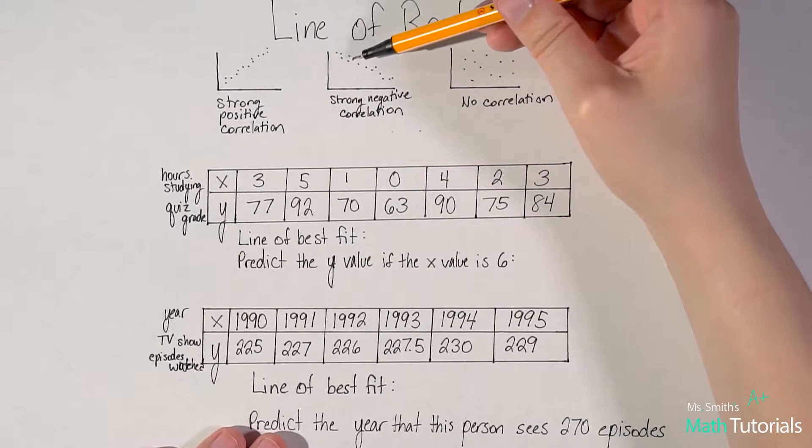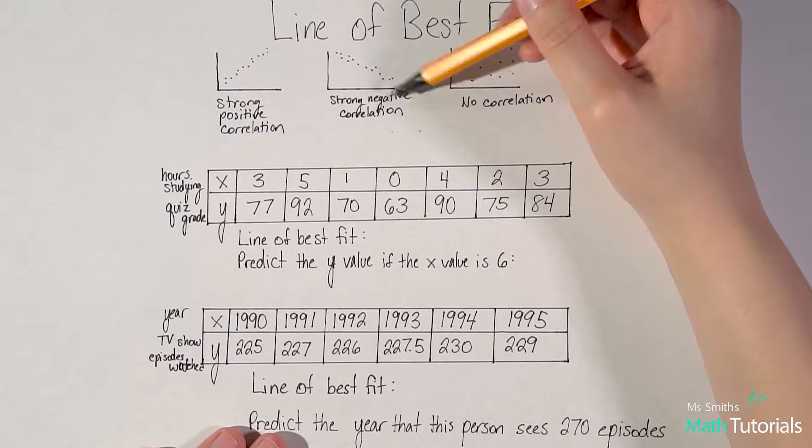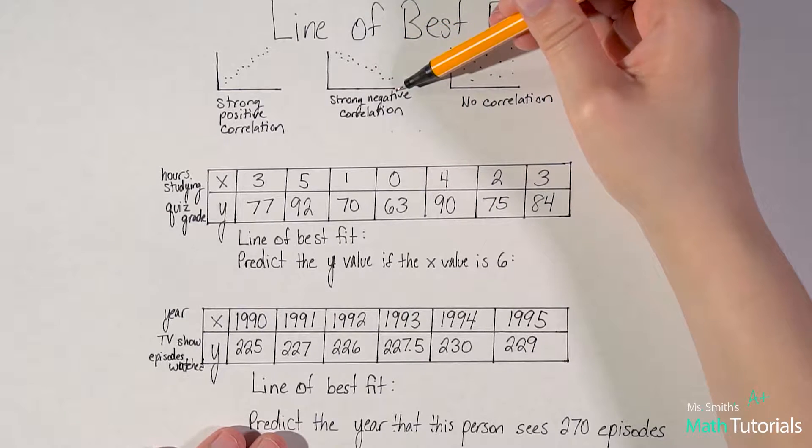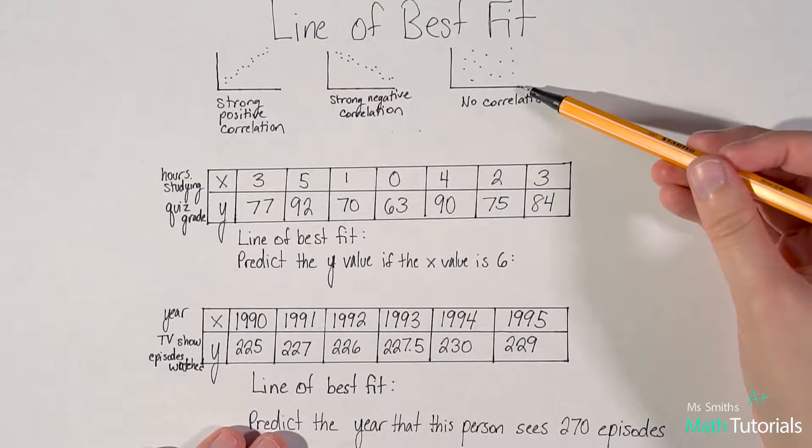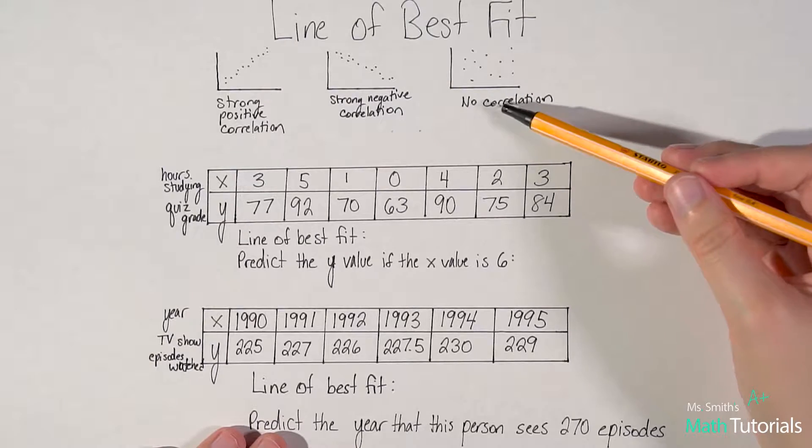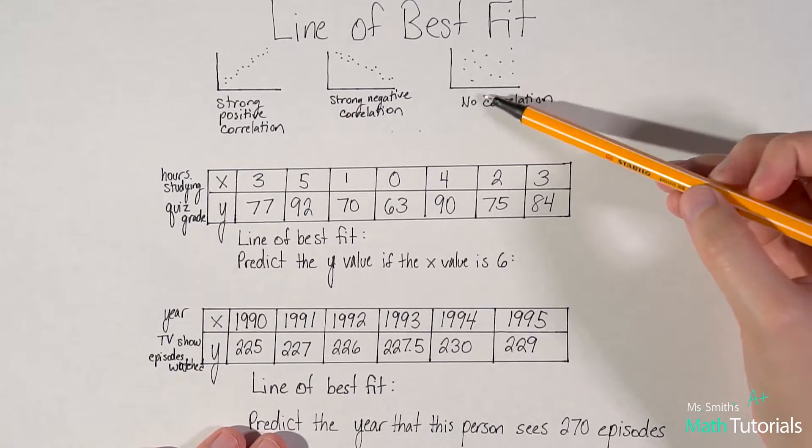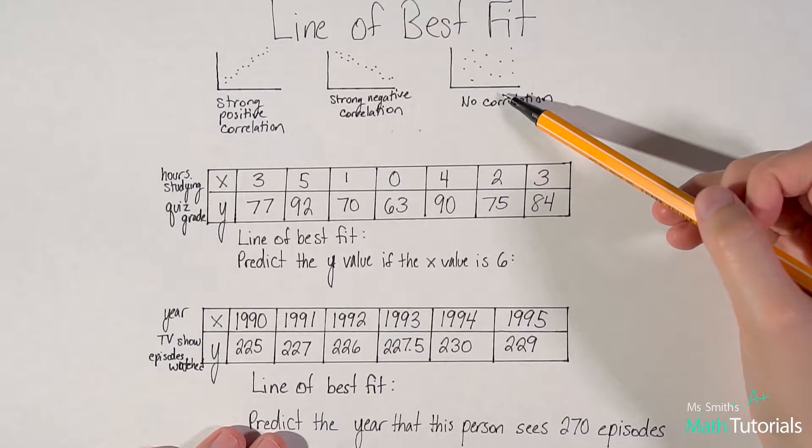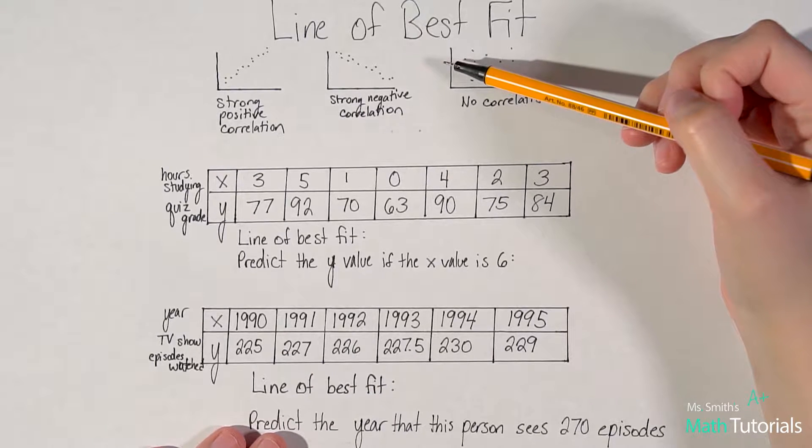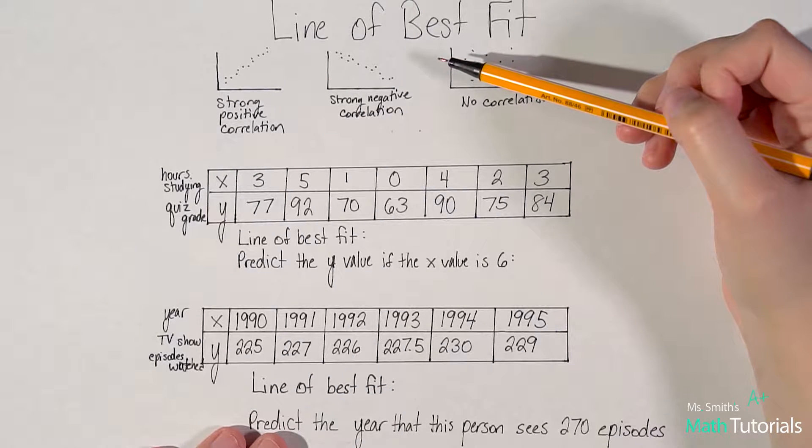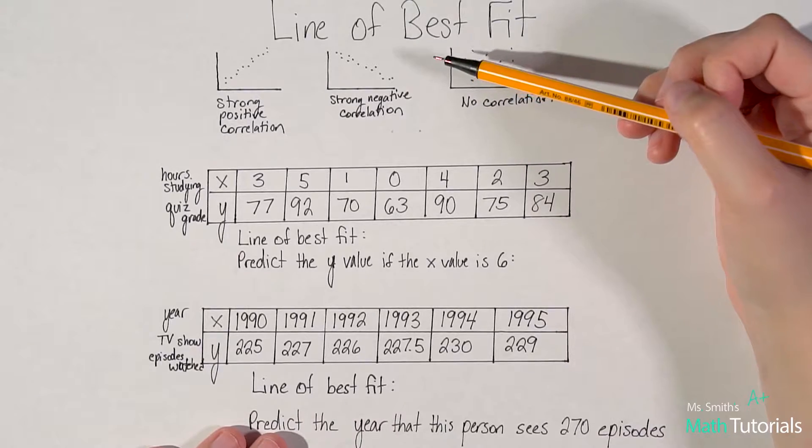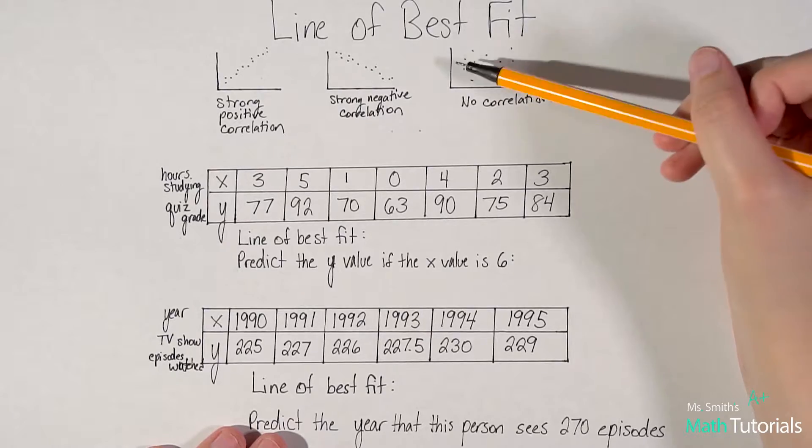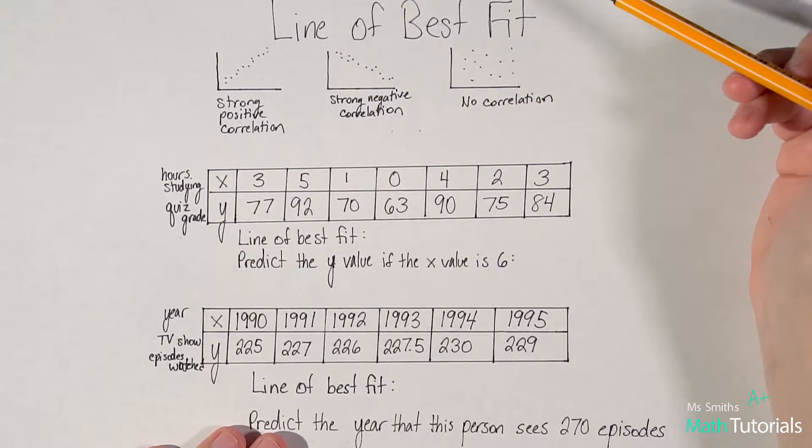Because these dots are really tightly close together, we would call that a strong negative correlation. And it's negative because it's going down. The slope is negative. Over here, I've drawn an example of just no correlation. This could be price of ice cream versus number of zebras in the zoo. Two things that have no relationship to each other, and there's no clear correlation on that graph.